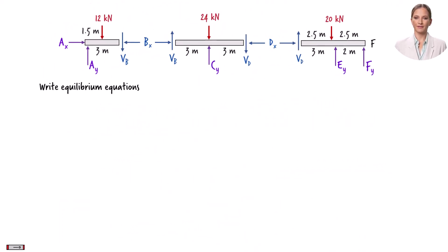For each segment of the beam, we need to write three equilibrium equations. These equations are: the sum of the forces in the x-direction, the sum of the forces in the y-direction, and the sum of the bending moments about the z-axis must be zero.